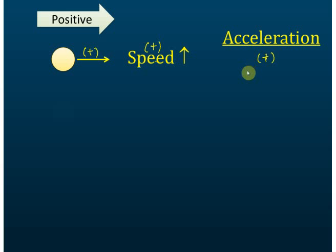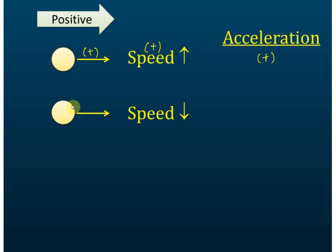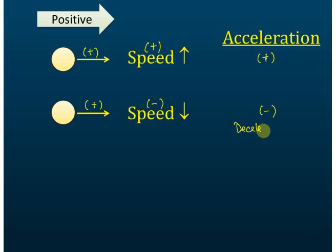Another case: the object still moves to the right, so the direction is positive, but the speed decreases. The change of speed is negative, so the acceleration is negative. We call this deceleration — the speed goes down, so it undergoes deceleration.